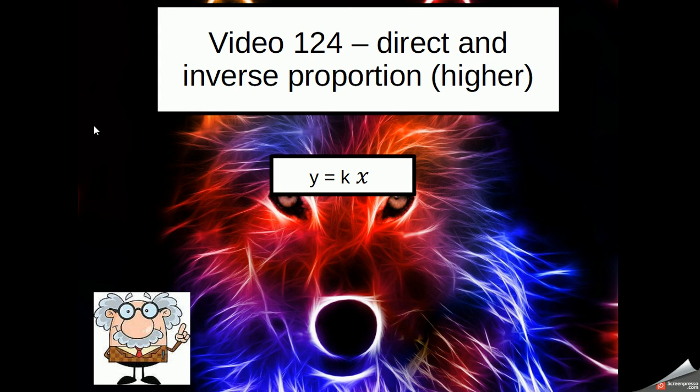Direct proportion is when it falls into this equation: y equals kx. In other words, y is equal to a certain number of x's. For instance, y equals 3x, y equals 10x, and so on. What that's telling us is as x increases, so does y at the same rate.